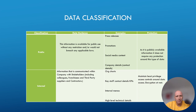The next label is internal — information communicated within the company with stakeholders including colleagues, franchisees, and third-party suppliers and contractors. Examples include organizational charts, key staff contact details and KPIs, internal memos, and high-level technical details. For internal data the minimum requirements are least privileged access controls around data access and encryption at rest.